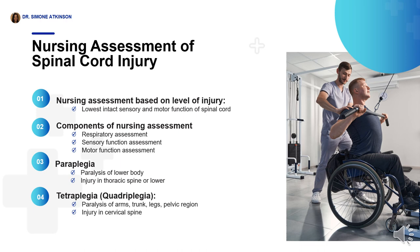Paraplegia is paralysis of the lower body and occurs when the injury is in the thoracic spine or lower. Tetraplegia, formerly known as quadriplegia, is paralysis of the arms, trunk, legs, and pelvic portions of the body, and occurs when the level of injury is in the cervical spine.